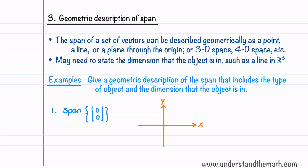Let's now talk about the geometric description of span. The span of a set of vectors can be described geometrically as a point, a line, or a plane through the origin. It can also be described as 3D space, 4D space, etc. We often need to state the dimension that the object is in, such as stating that we have a line in R3.